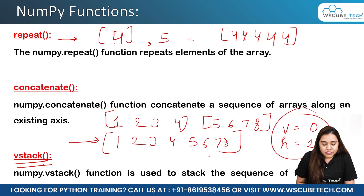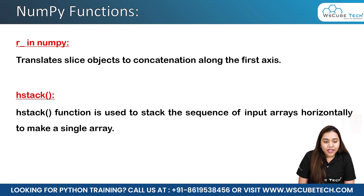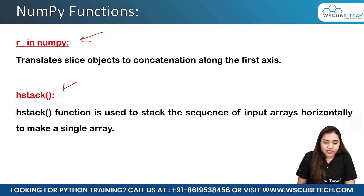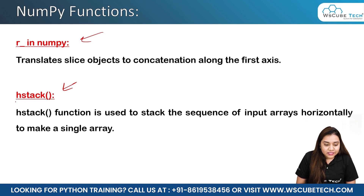Next we have vstack, which is used to concatenate two arrays along the vertical axis. You can use the concatenate method with axis=0, or directly use vstack. We also have the r_ statement, which does the same thing — concatenating two arrays along the vertical axis. Lastly, hstack is the opposite of vstack: it joins or concatenates two arrays along the horizontal axis.